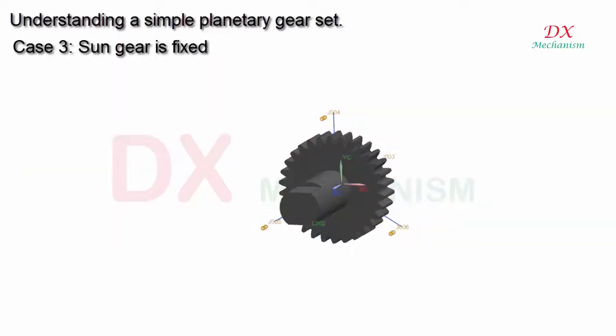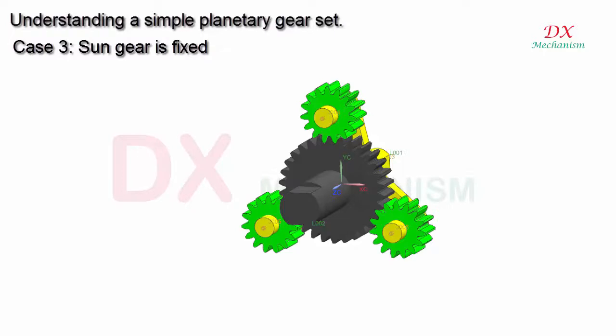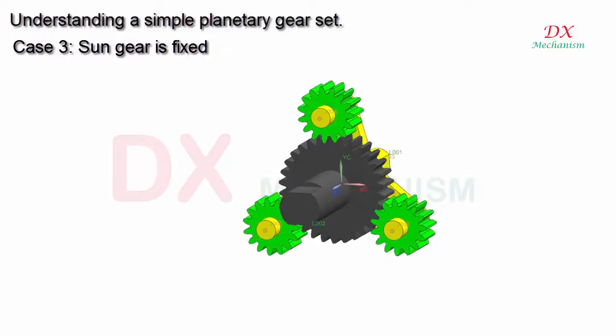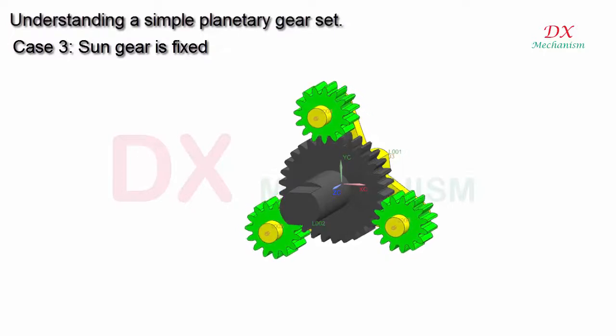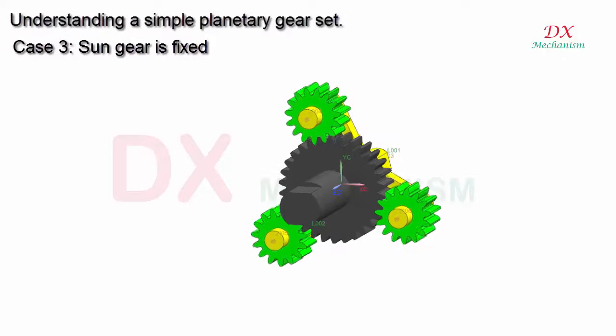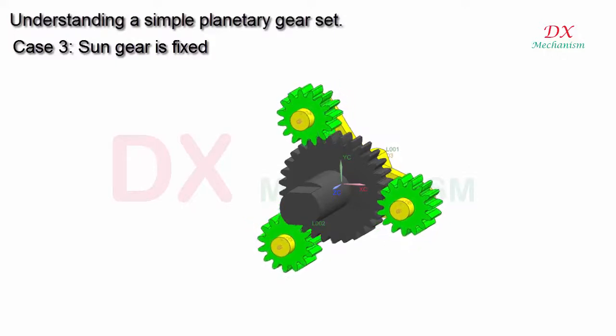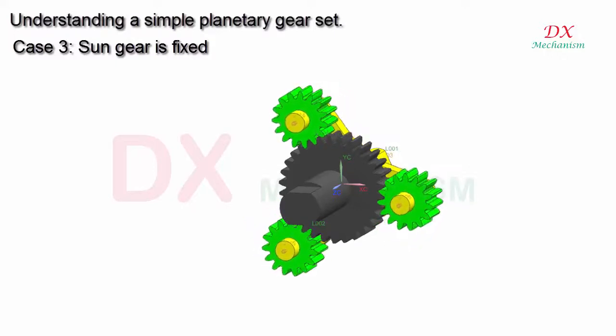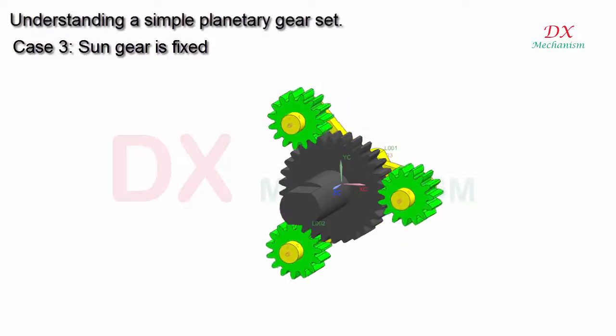Case 3: the sun gear is fixed. When the carrier rotates around itself, the planet gear will have two transmissions: rotation around its own axis and rotation around the center axis of the carrier.